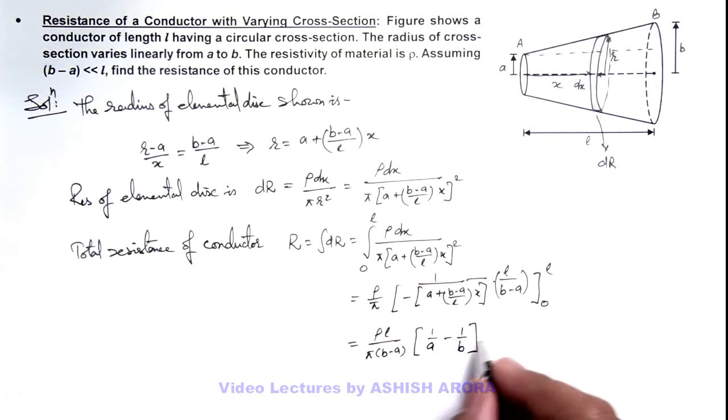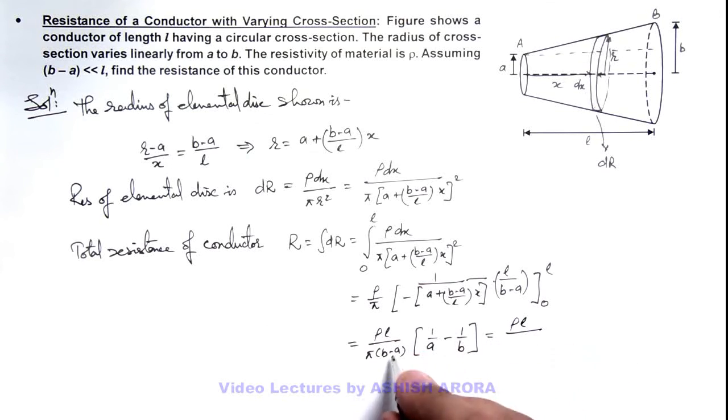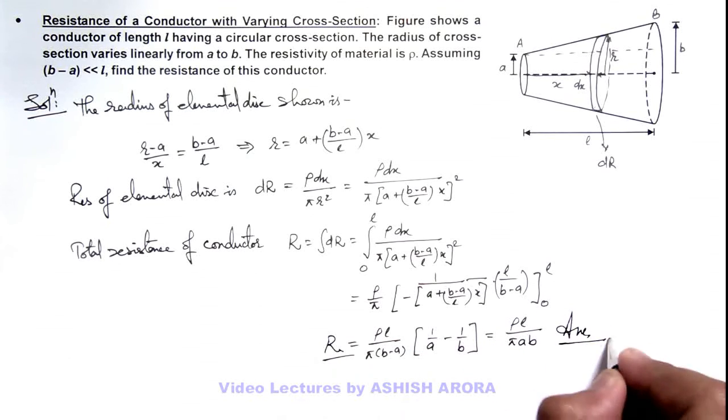So if we further simplify it, you can see the result we are getting is ρl divided by πab. Here b minus a also gets cancelled out. So that is the resistance of this conductor and the final result of this problem.